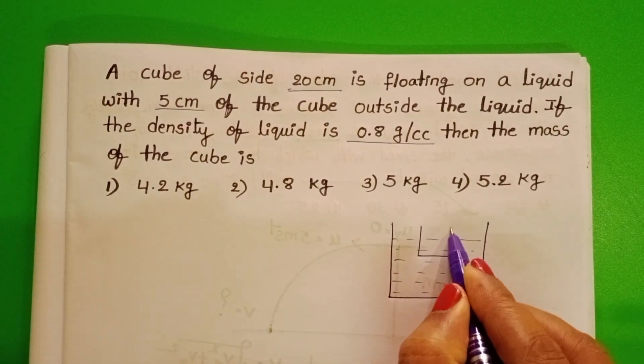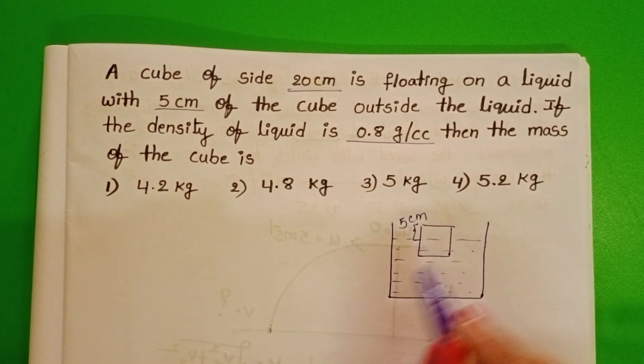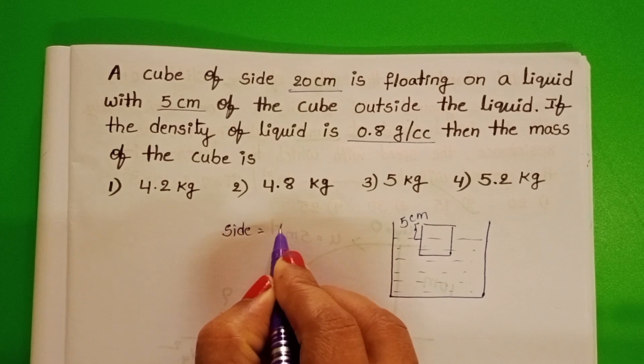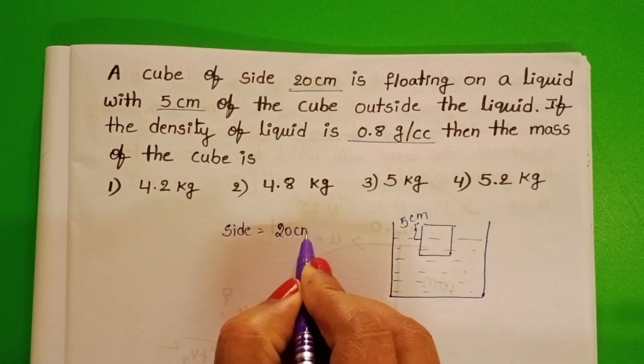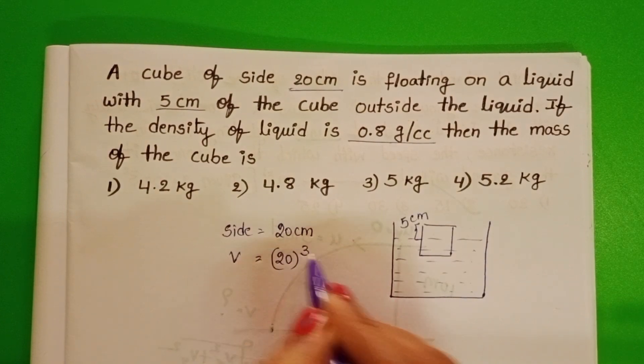A cube is floating on a liquid with 5 cm of the cube outside the liquid. Given: side of the cube equals 20 cm. Volume of the cube equals 20 cubed.